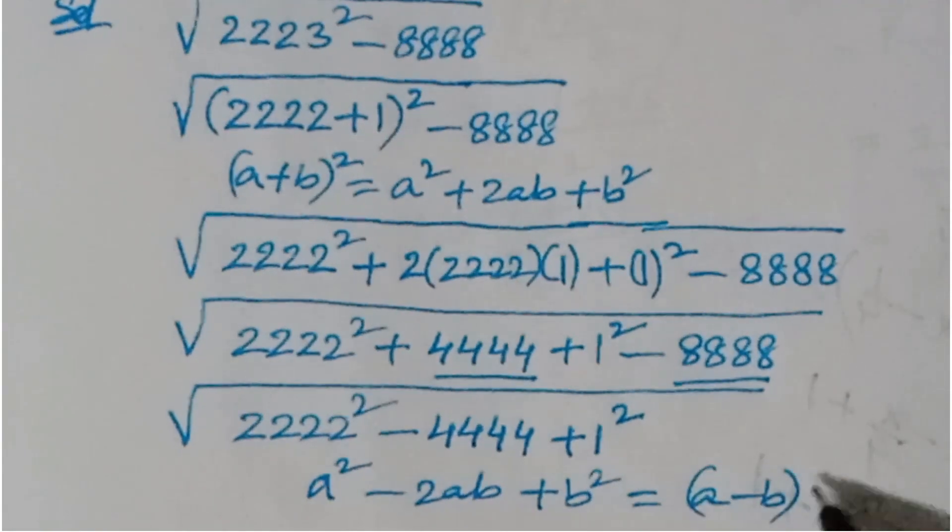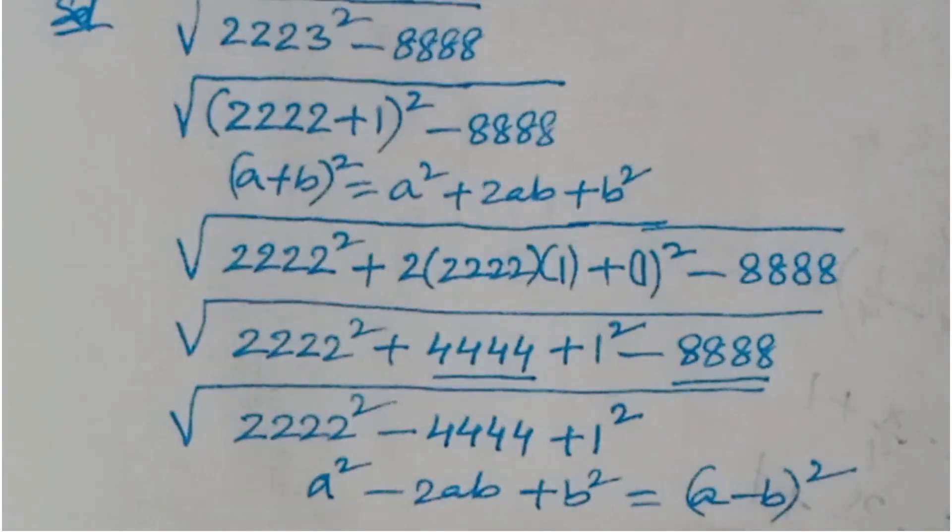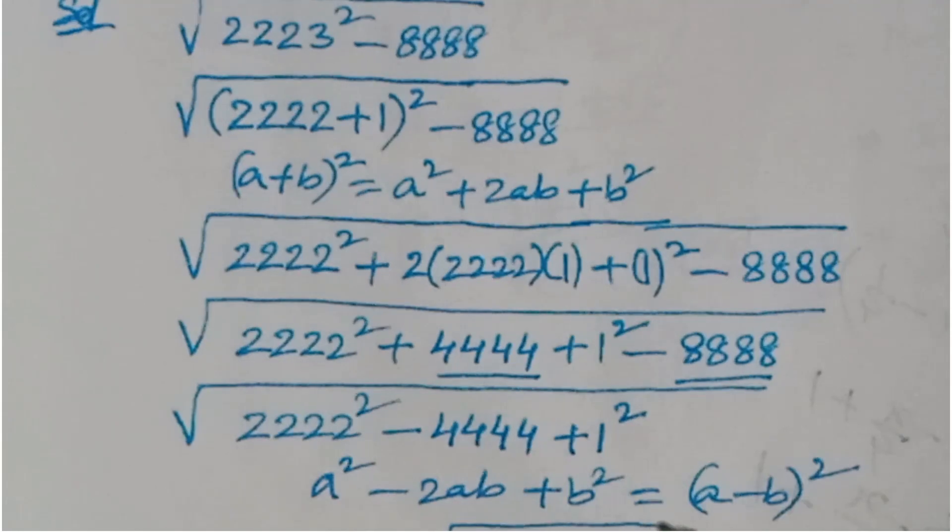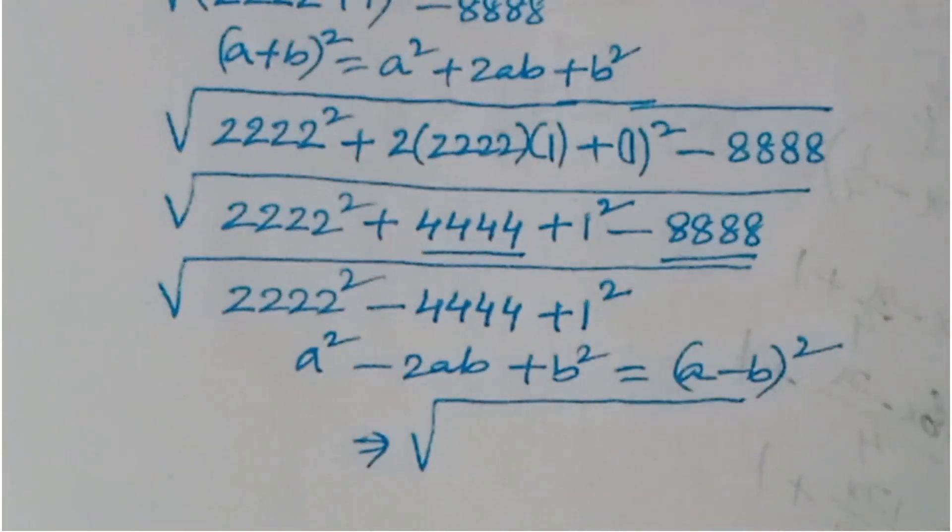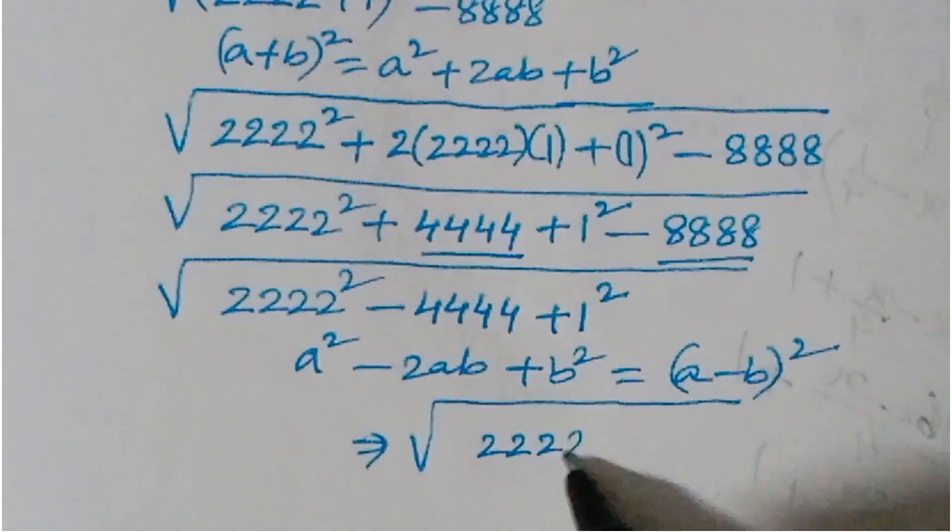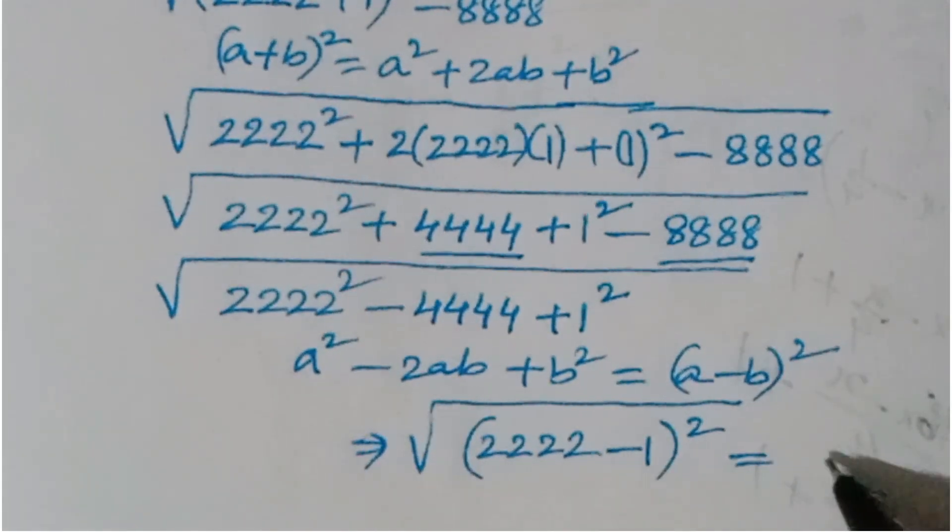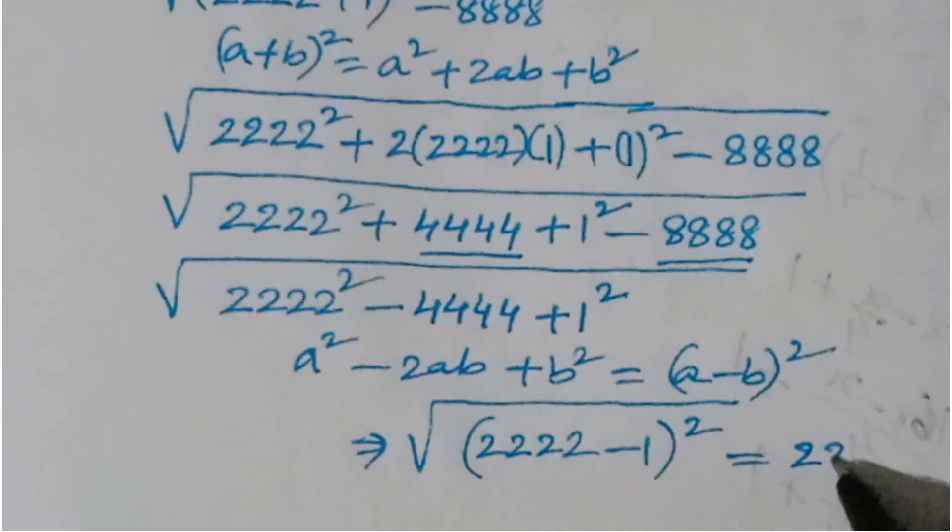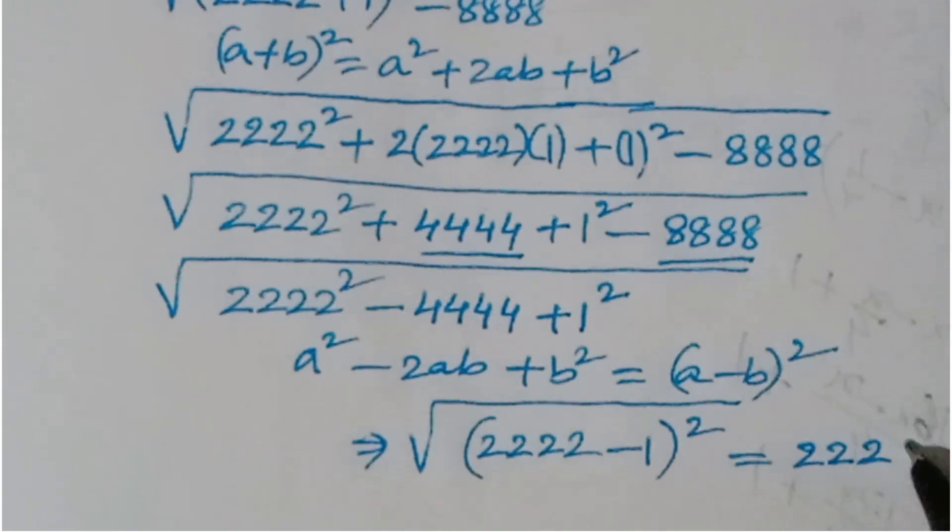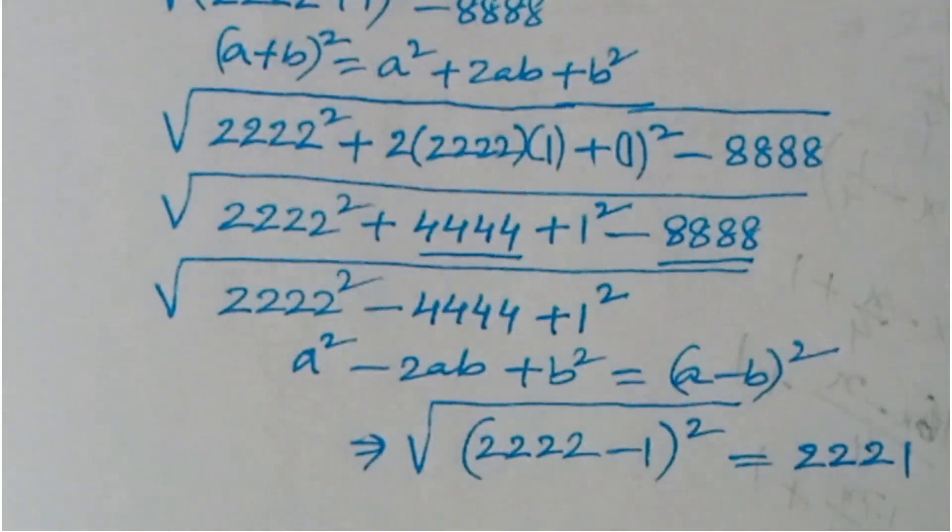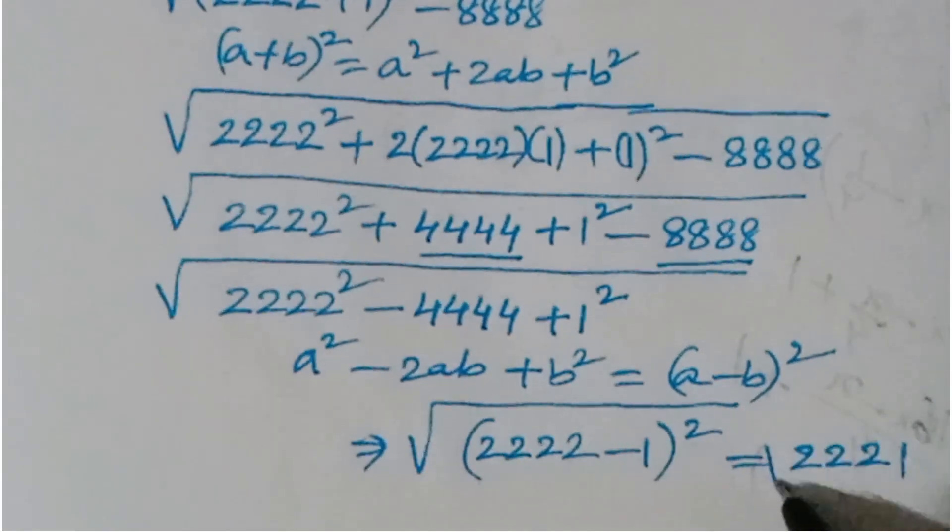So here if you apply this formula, what you'll get here: 2222 minus 1 whole squared.